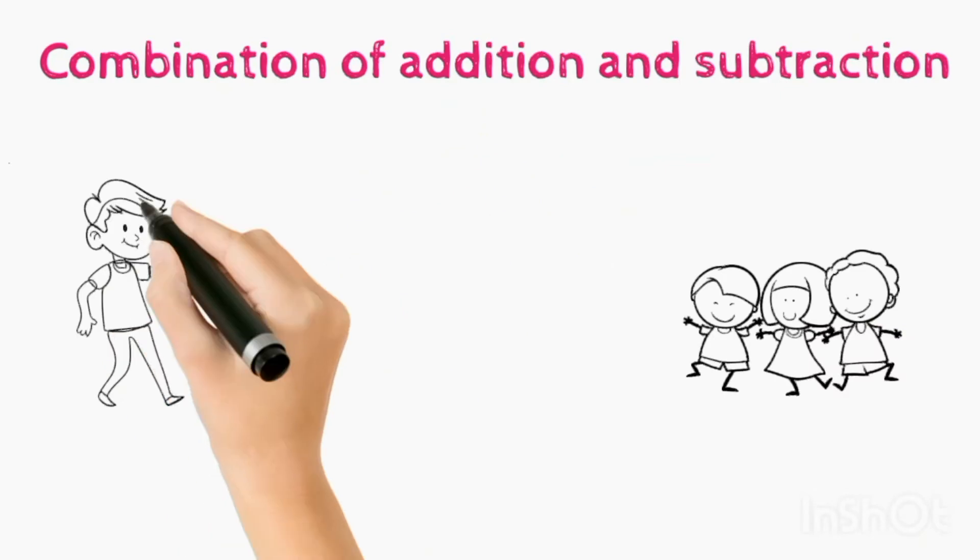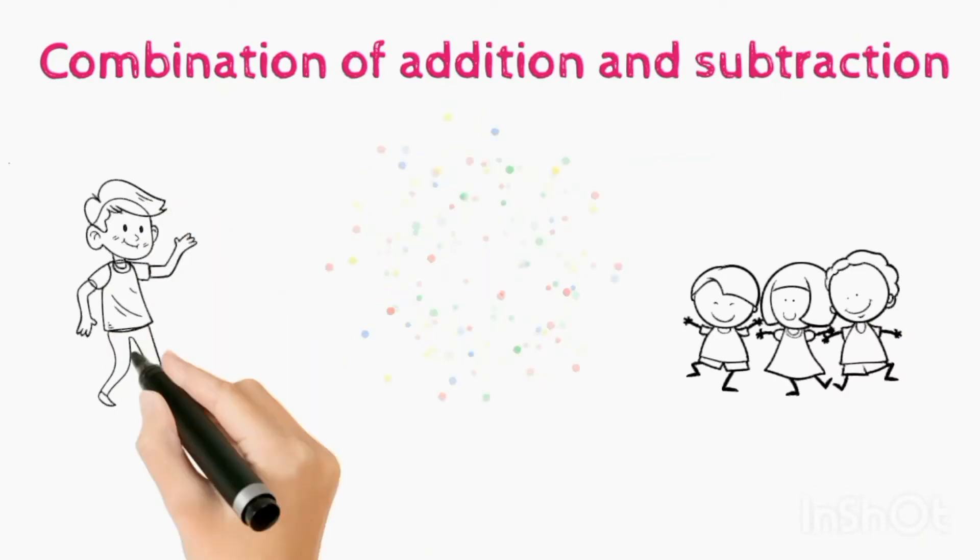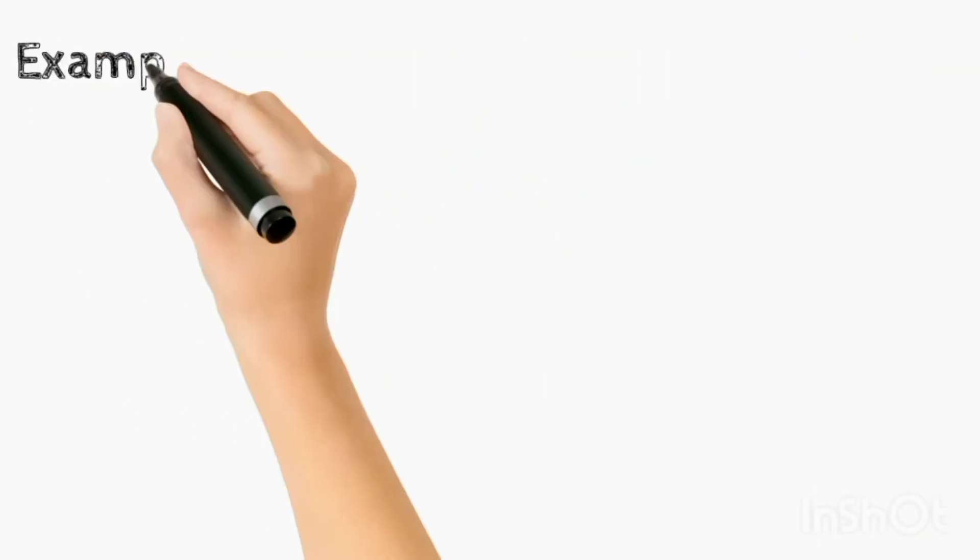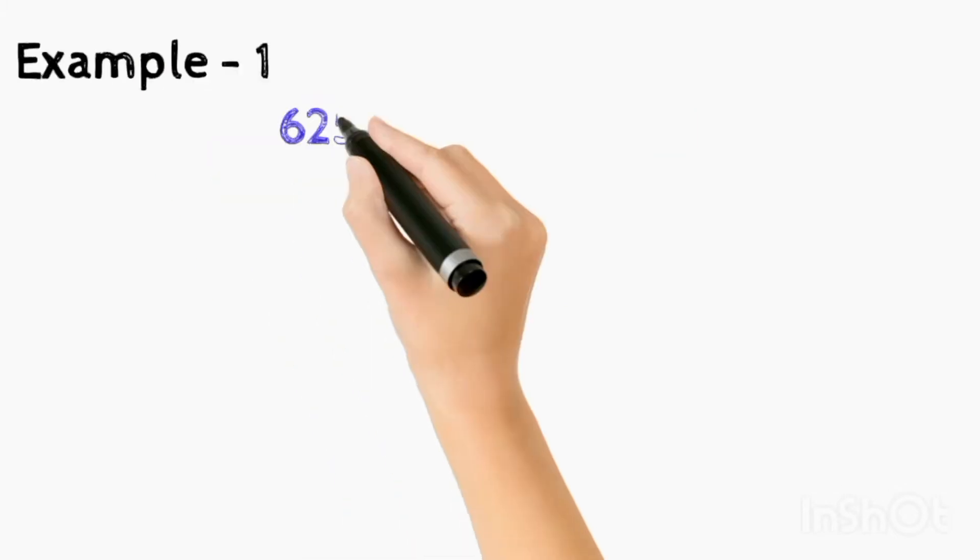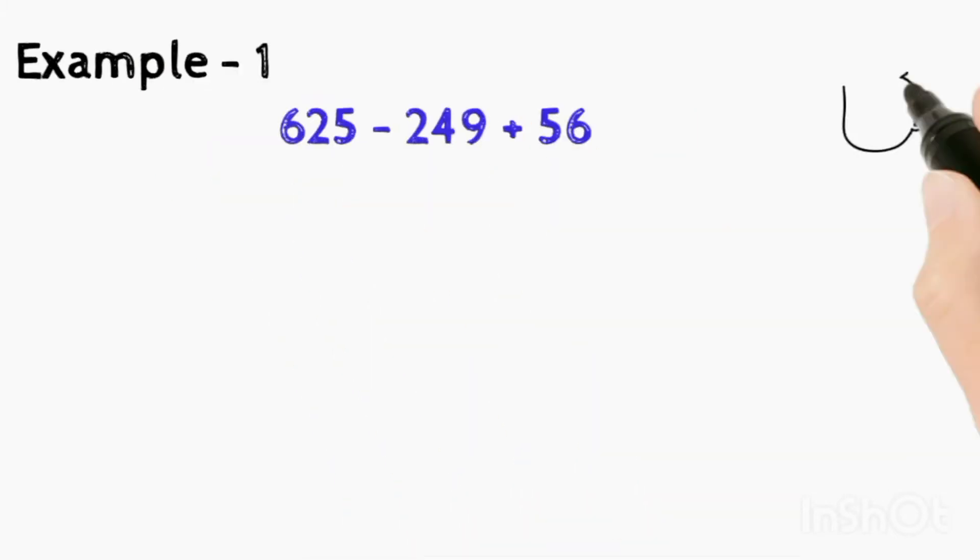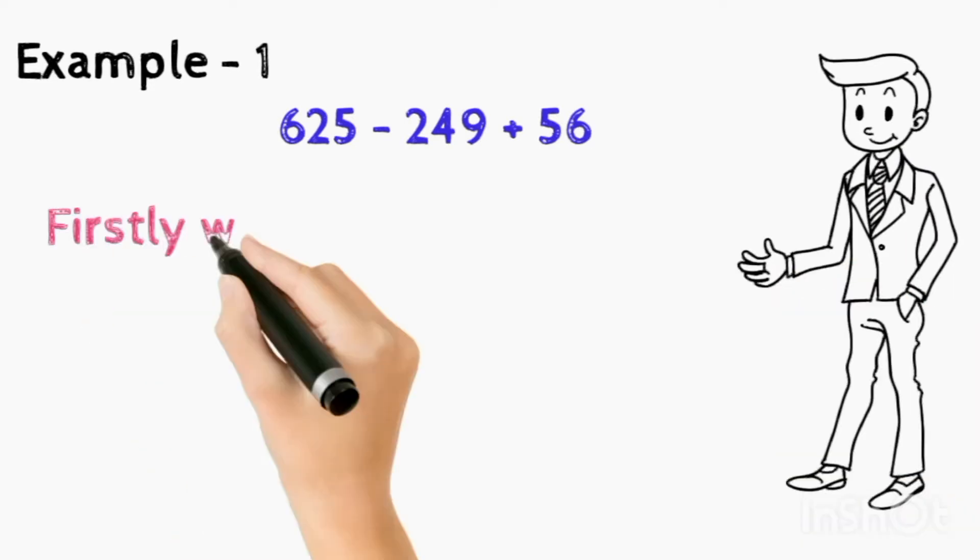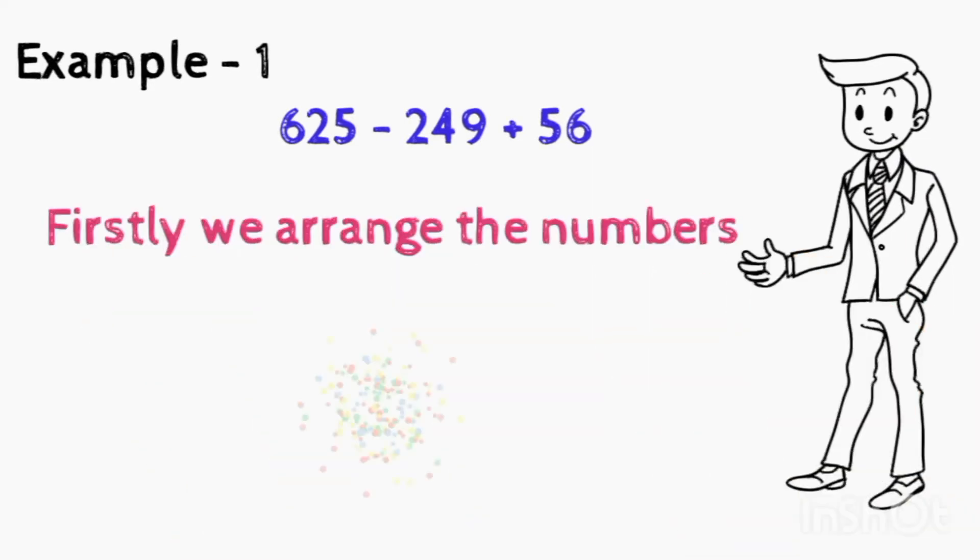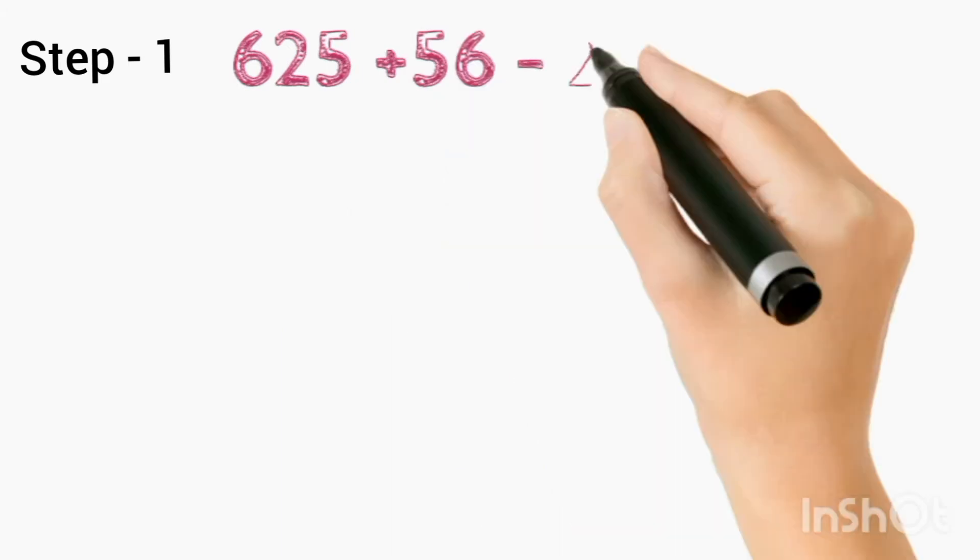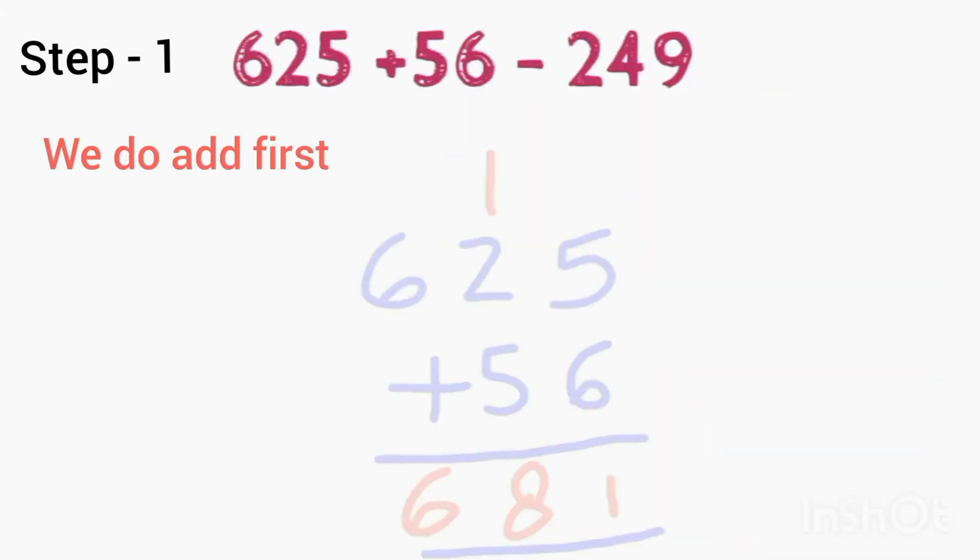Today my topic is combination of addition and subtraction. For example, there are some numbers: 625 minus 249 plus 56. Now firstly we arrange the numbers. Step 1: 625 plus 56 minus 249. Firstly we do add.